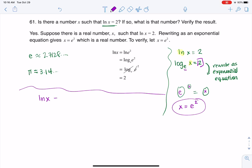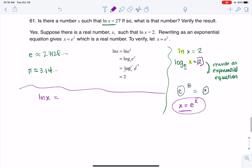So let's see what ln of x is equal to if, in fact, x is equal to e squared. So this would be ln of e squared. So this would be log base e of e squared.